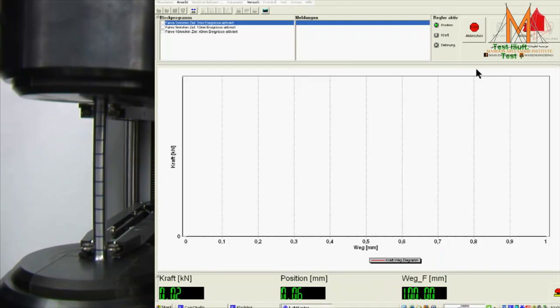During the tensile test, the test piece is slowly and constantly elongated with a standardized speed. The force that the test piece opposes to the imposed elongation is recorded and can be seen at the bottom left-hand corner of the computer display. The material behavior can best be observed in a force elongation diagram. The force F is being plotted upwards on the vertical axis. The elongation delta L towards the right on the horizontal axis.